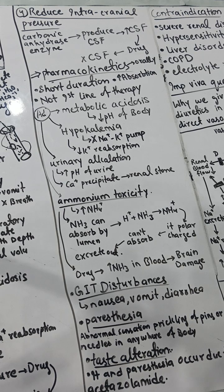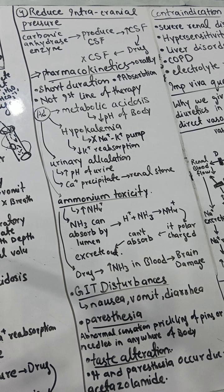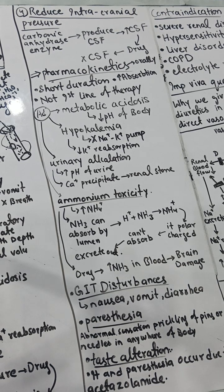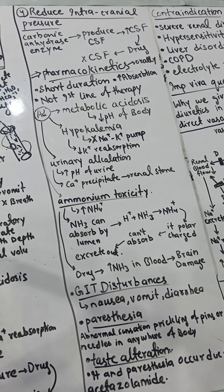Regarding pharmacokinetics: acetazolamide is given orally with very good absorption. The other two drugs — dorzolamide and brinzolamide — are applied topically as eye drops for patients with raised intraocular pressure (glaucoma). These eye drops decrease intraocular pressure. CAI has a very short duration of action, which is why it cannot be given as first-line therapy.